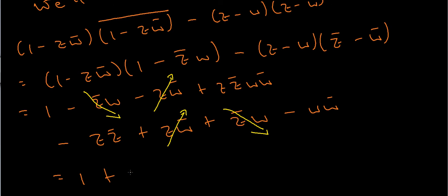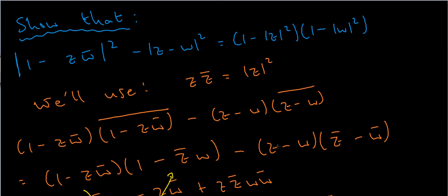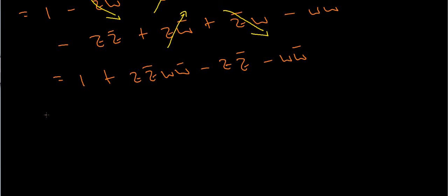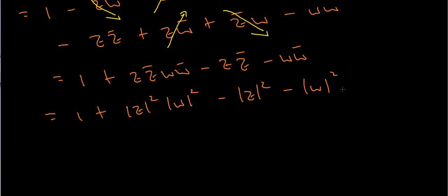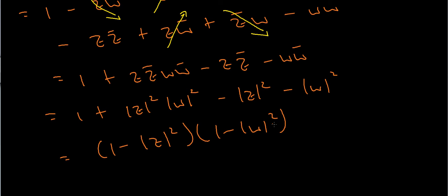What I'm left with is 1 plus zz̄ww̄ minus zz̄ minus ww̄. Using our identity that z times z̄ equals |z|² and w times w̄ equals |w|², this becomes 1 plus |z|²|w|² minus |z|² minus |w|², which factorizes to (1 - |z|²)(1 - |w|²). And that's how we prove this complex number identity.